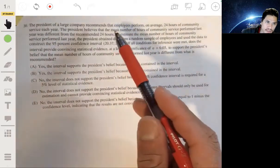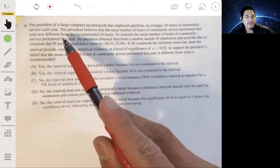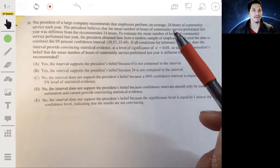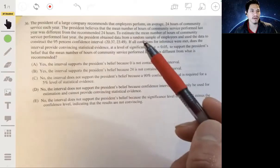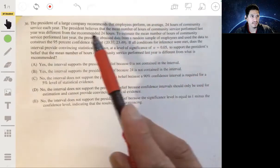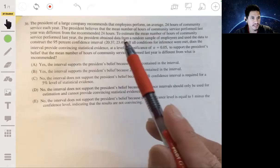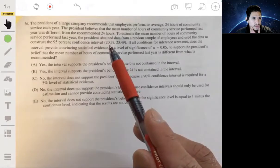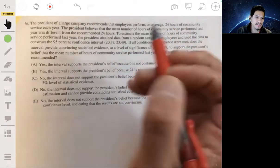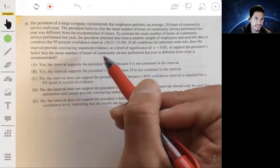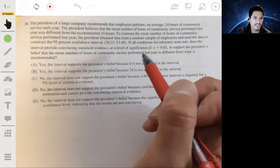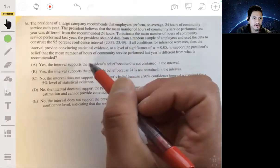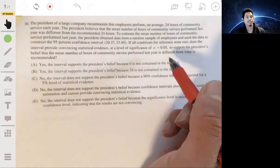The president of a large company recommends that employees perform on average 24 hours of community service each year. The president believes that the mean number of hours of community service performed last year was different from the recommended 24 hours. To estimate the mean number of community service performed last year, the president obtained data from a random sample of employees and used the data to construct a 95% confidence interval from 20.37 to 23.49. With all conditions for inference met, does the interval provide convincing statistical evidence at a level of significance of alpha equal to 0.05?